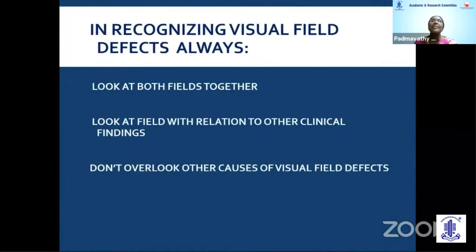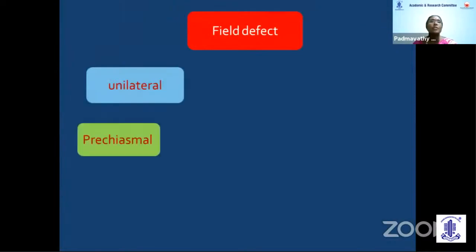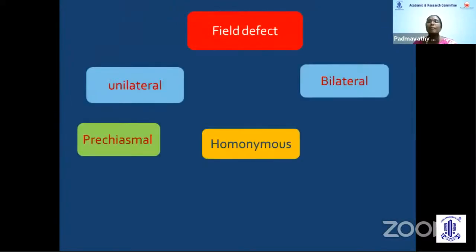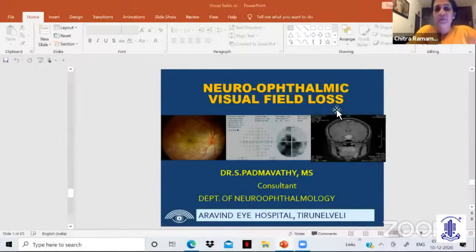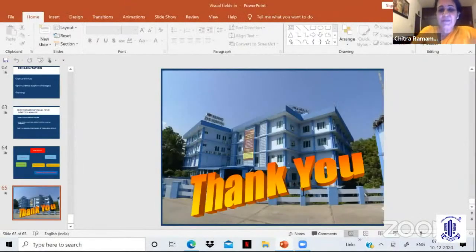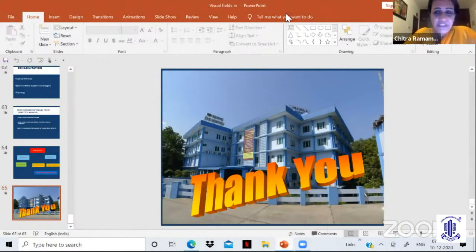In recognizing visual field defects, you must look at both fields together and correlate with other clinical findings. Don't overlook other causes of visual field defects. Determine whether it is unilateral or bilateral, homonymous or heteronymous, chiasmal or retrochiasmal. Thank you. Thank you, Dr. Padmamati — that was a very intensive and extensive talk. The PGs will gain a lot from it.